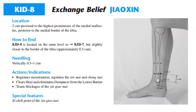Kidney 8 is located 2 cun proximal to the highest prominence of the medial malleolus, posterior to the medial border of the tibia. To find Kidney 8: it is located at the same level as Kidney 7 but slightly closer to the border of the tibia, approximately 0.5 cun. Kidney 8 is needled vertically 0.5 to 1 cun. It regulates menstruation, regulates the Ren Mai and Chong Mai, and clears heat and eliminates dampness from the lower burner, treating blockages of the yin Chong Mai. For its special feature, it is the Xi-cleft point of the yin Qiao Mai.